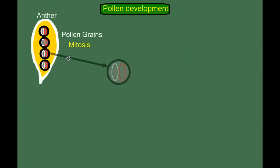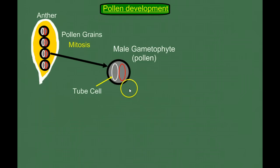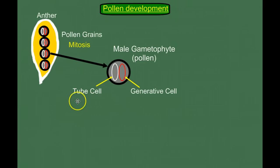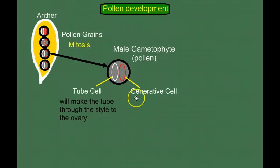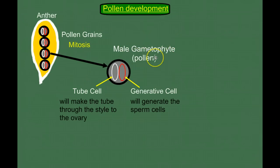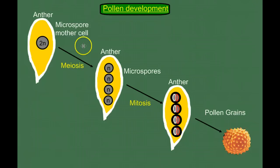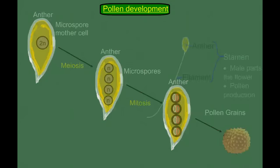If we recall our alternation of generation life cycles, spores will become the gametophyte generation. So these microspores will grow by mitosis to form pollen grains — the pollen grain is the male gametophyte in seed plants. If we blow one of these up and look closer, inside the pollen there are two distinct cells: the tube cell and the generative cell. The tube cell will make a tube down to the ovary to aid in fertilization, and the generative cell will generate the sperm cells. Pollen is not tree sperm — it is the gametophyte, but it will be transferred from one plant to another.